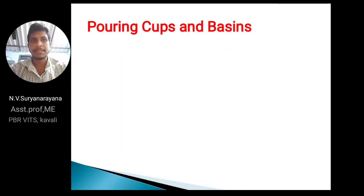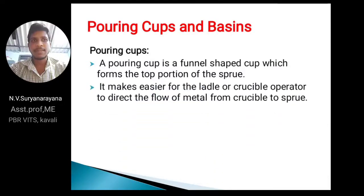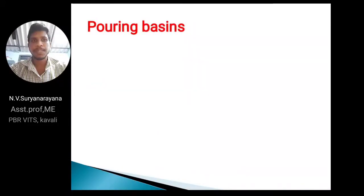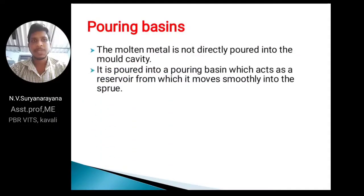First, pouring cups and basins. A pouring cup is a funnel-shaped cup which forms the top portion of the sprue. Through the pouring cup, we pour molten metal into the cavity. It makes it easier for the ladle or crucible operator to direct the flow of metal from the crucible to the sprue. Cups and basins are similar — the cup is funnel-shaped and directly receives the poured metal.